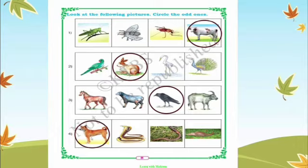In the second one, all three are birds and rabbit is the odd one, so we are going to circle rabbit. For the third one: horse, goat, crow, and buffalo — all three are animals and only one is a bird, so we are going to circle the bird.